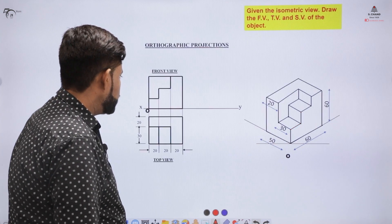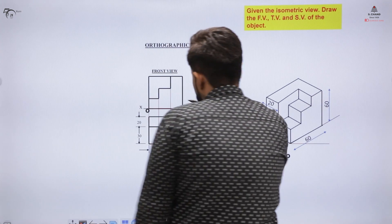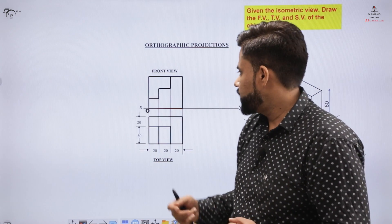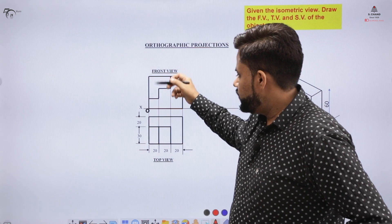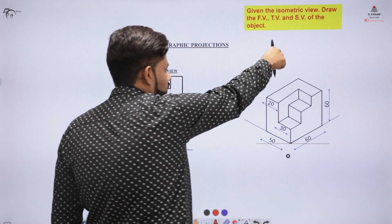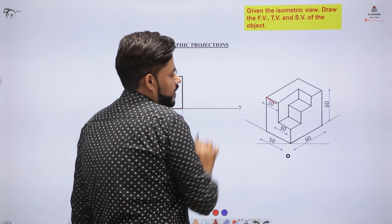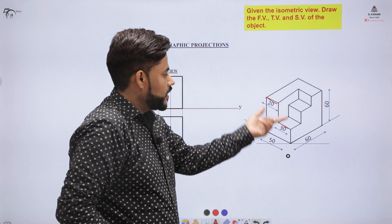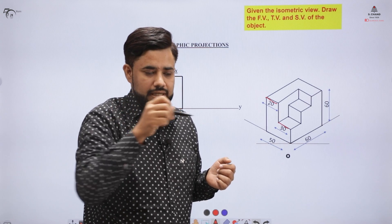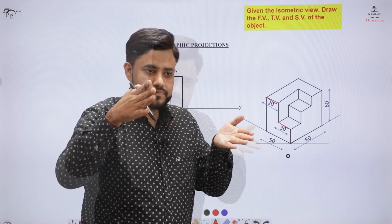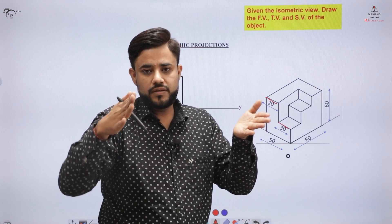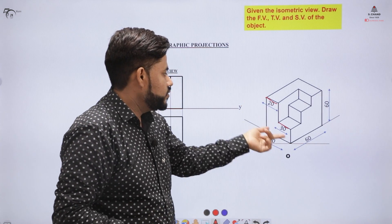To draw the top view, we need to project all the points downwards, because the front view is exactly above the top view. Looking at the object from the top, you get this part as 20 and this part as 30. So on the piece of paper, you will get two horizontal lines — one is 20 and another is 30. Now you need to rotate this horizontal plane 90 degrees clockwise as per the general procedure, making these two lines vertical.